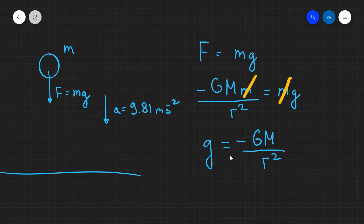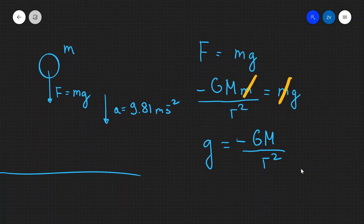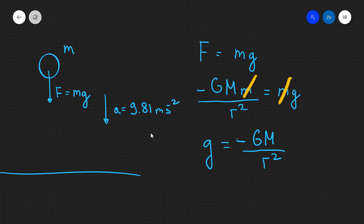g is going to be different on, let's say, Jupiter, because the mass of Jupiter is quite a bit greater — though not significantly different, because the radius of Jupiter is also considerably bigger. I think it's about 25 meters per second squared or so — worth checking. g is not some crazy value. If there are any questions, please feel free to drop a comment down below, and please consider subscribing.